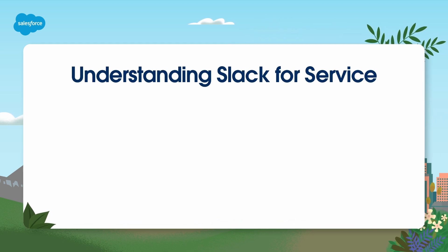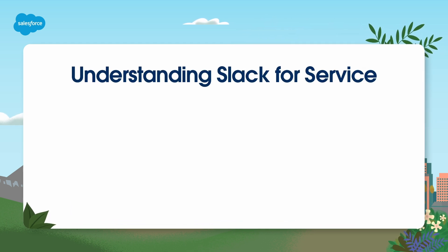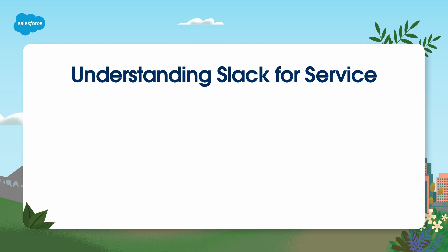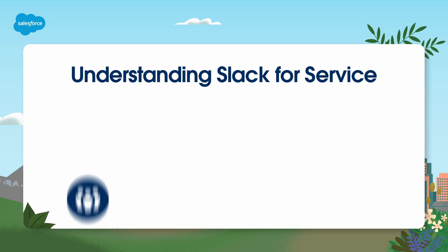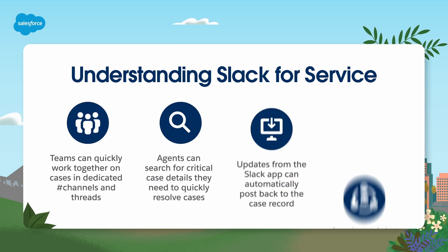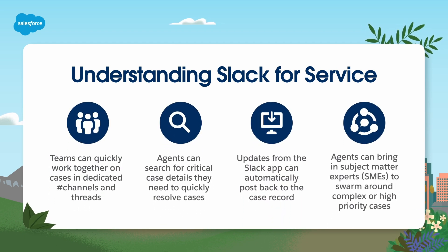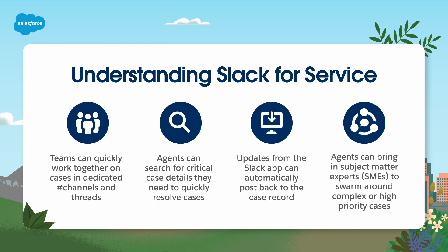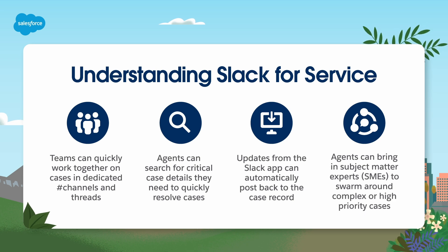Simply put, Slack for Service is the future and brings many improvements from the traditional tiered model. Slack for Service brings agents, experts, and case records all together to help quickly resolve high-priority or complex cases.